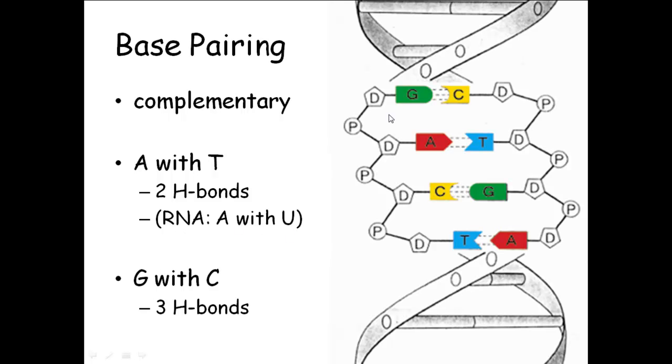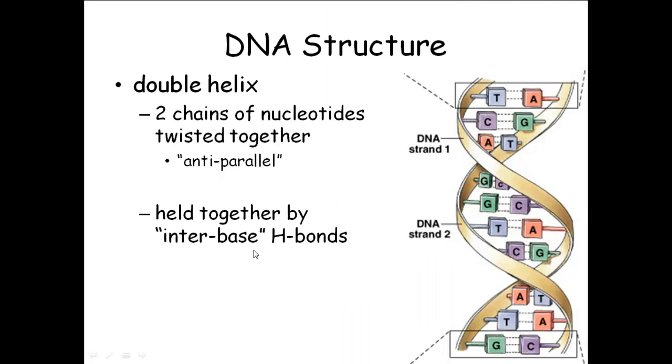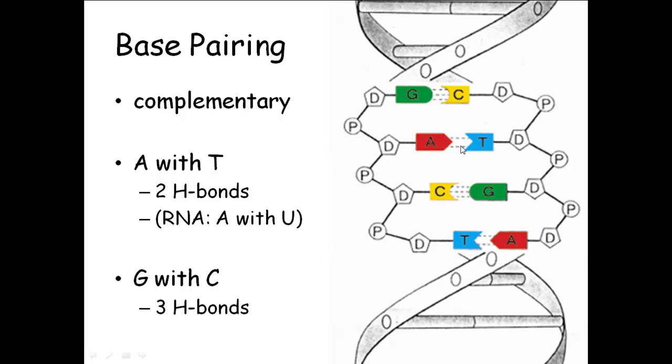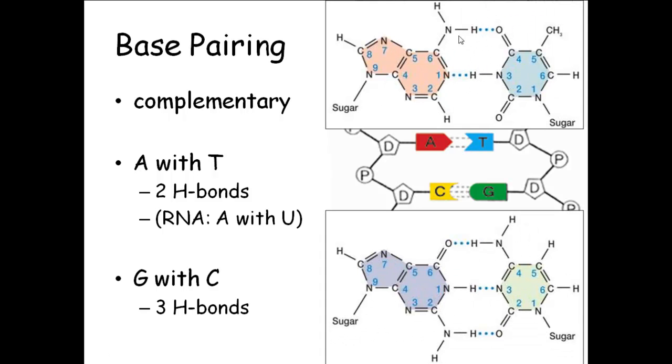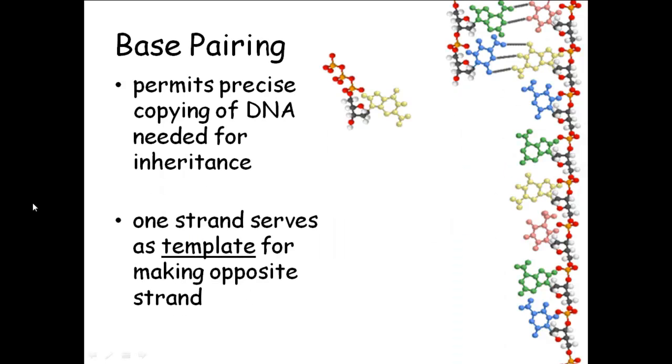And the way the bases, the complementary bases, are attached to one another is by hydrogen bonds. You can have, between A's and T's, you have two hydrogen bonds. Between C's and G's, you have three. And so what that does, which we'll talk about a little bit later, is that if you have one side,